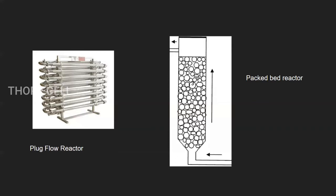This is how a plug flow reactor and packed bed reactor looks like. If you can see the picture of a plug flow reactor, it seems like a long tube is bent several times. It is usually manufactured in this fashion to reduce the space it occupies.